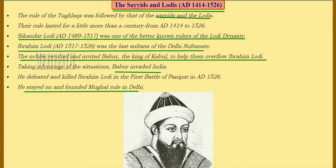Next came the Sayyids and the Lodis, who ruled from AD 1414 to AD 1526, following the Tughlaqs for almost a century. Sikandar Lodi was among the better-known rulers of the Lodi dynasty, while Ibrahim Lodi was the last Sultan of the Delhi Sultanate. The nobles revolted against Lodi rule and invited Babur, king of Kabul, to help overthrow Ibrahim Lodi. Taking advantage of the situation, Babur invaded India, killed Ibrahim Lodi in the Battle of Panipat in AD 1526, and founded Mughal rule in Delhi.